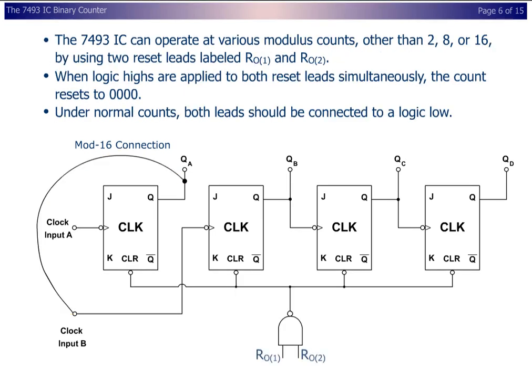The 7493 IC can operate at various modulus counts, other than 2, 8, or 16, by using two reset leads labeled R01 and R02. When logic highs are applied to both reset leads simultaneously, the count resets to 0-0-0-0. Under normal counts, both leads should be connected to a logic low.